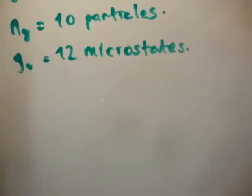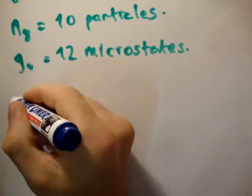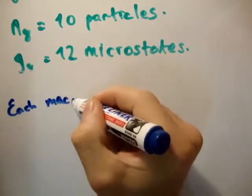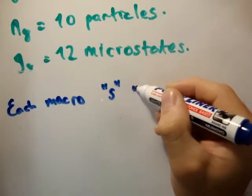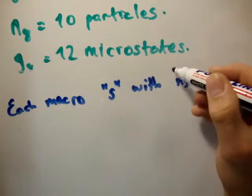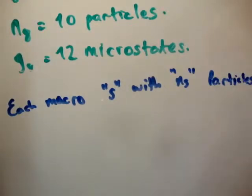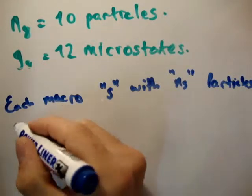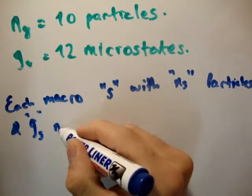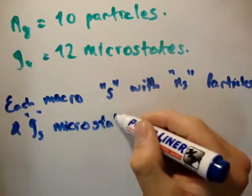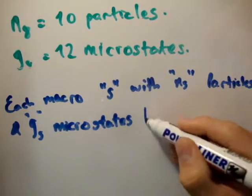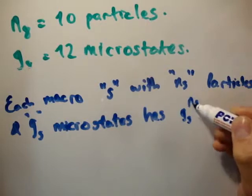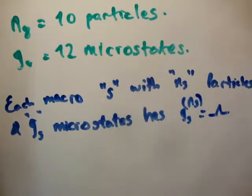Now just to rewrite that then. So each macrostate number s with n sub s particles and g sub s microstates has g sub s to the power of n sub s multiplicity for each macro box.